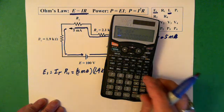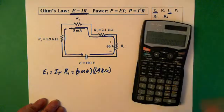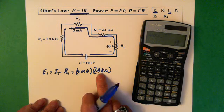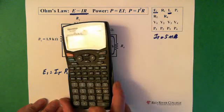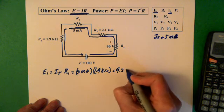I'm just going to put the 5 milliamps into the memory. So 5 exponent minus 3. And I'm going to store that in memory, because we're going to be using it a lot. There's our 5 milliamps, and it's multiplied by 1.9. So it's kilohms, so it's exponent 3 equals 9.5 volts.